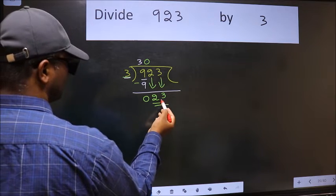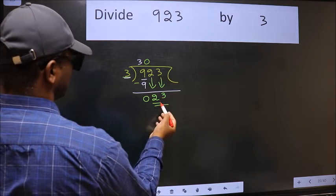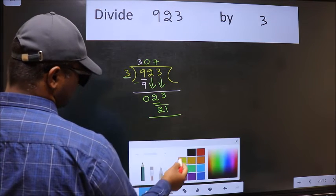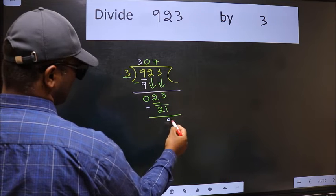Now 23. A number close to 23 in the 3 table is 3 sevens, 21. Now we should subtract. We get 2.